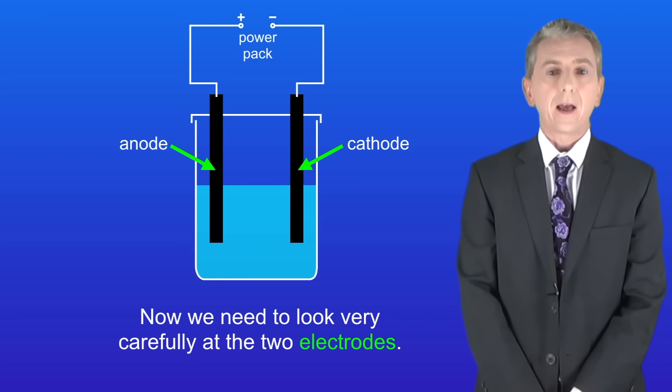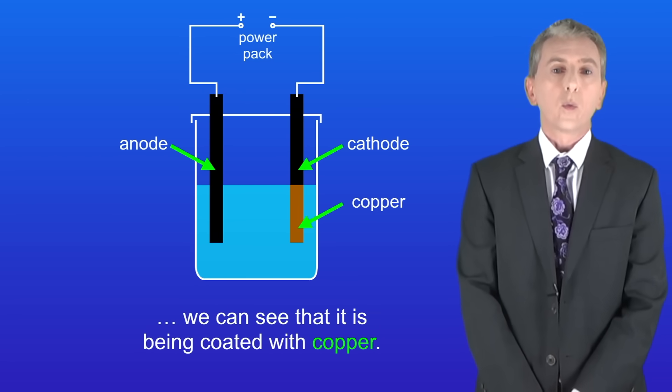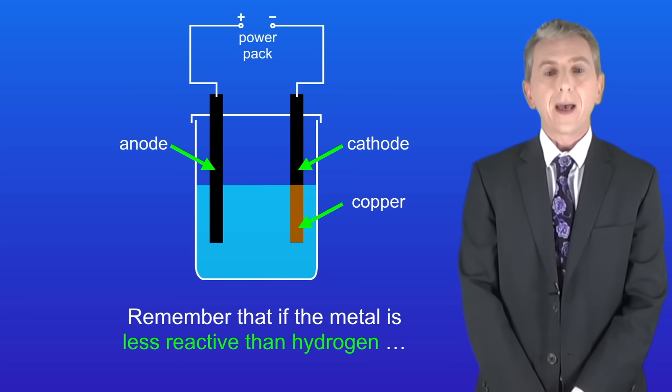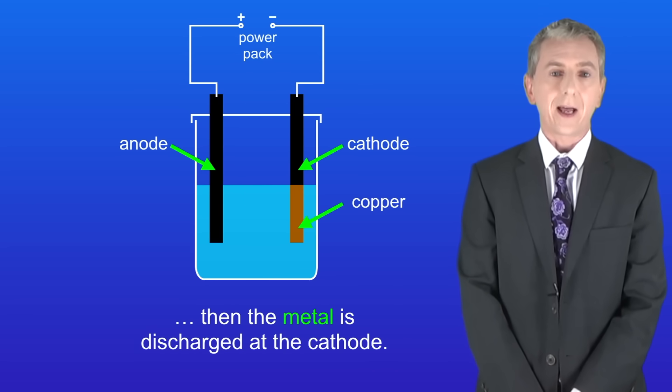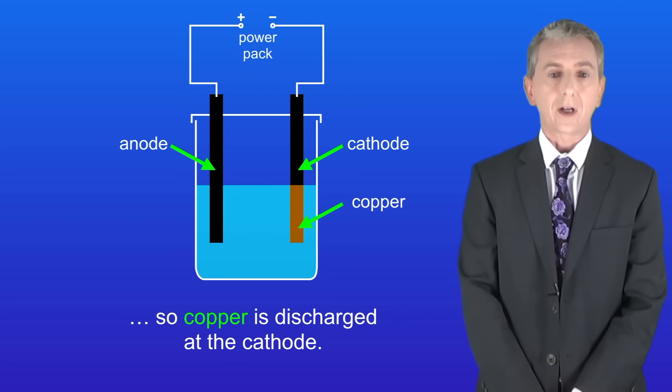Now we need to look very carefully at the two electrodes. If we look at the negative electrode, in other words the cathode, we can see that it's being coated with copper. Remember that if the metal is less reactive than hydrogen then the metal is discharged at the cathode. In this case copper is less reactive than hydrogen so copper is discharged at the cathode.